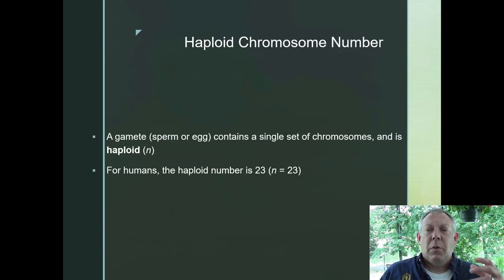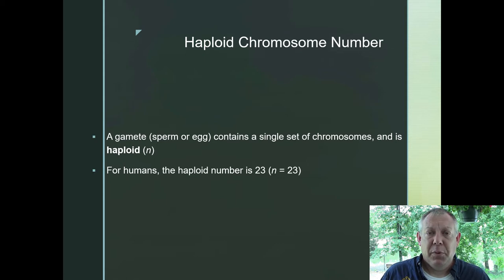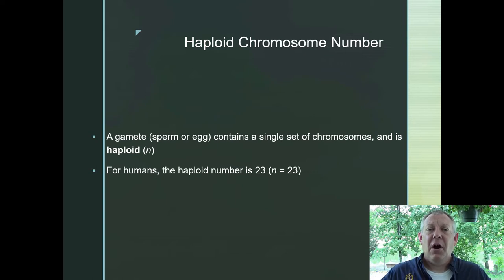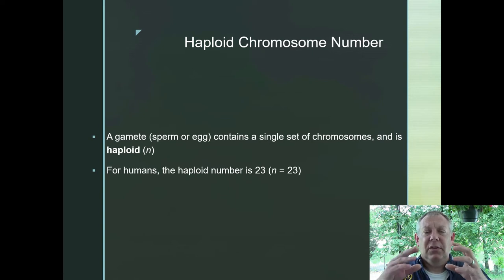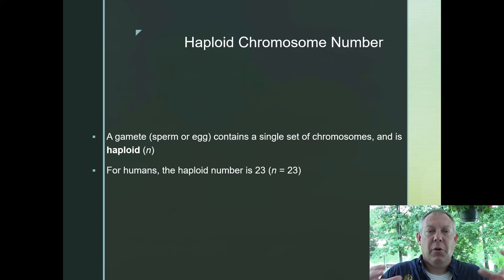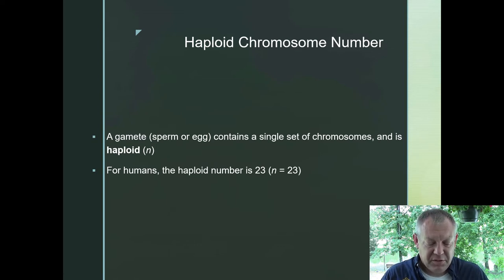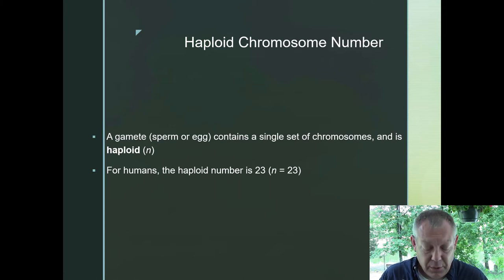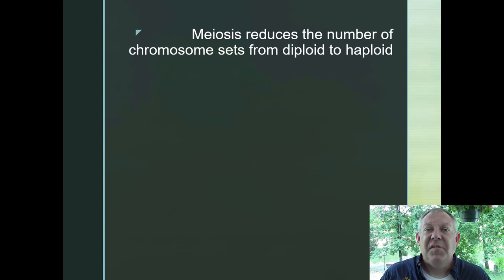When we talk about gametes — a sperm or an egg — those have to be haploid. They have to have half the typical chromosome content, because later on they're going to fuse together and bring you back to the typical chromosome content. If you didn't make the gametes haploid, if they were also diploid, then every time they fused you would double the chromosomes, and after a couple generations you'd have so many chromosomes the cell wouldn't have room for anything else. For us, the haploid number is 23. So how do we go from diploid to haploid? That's what meiosis does.